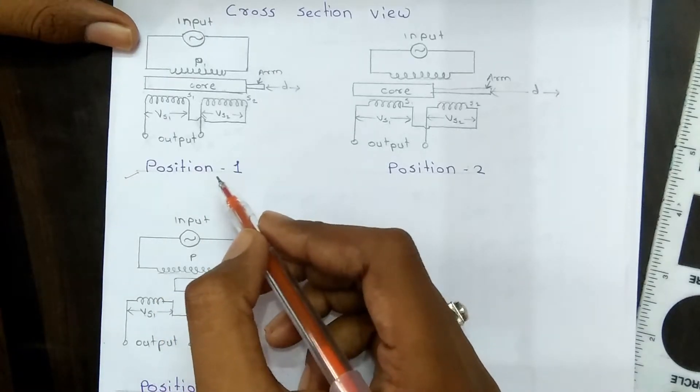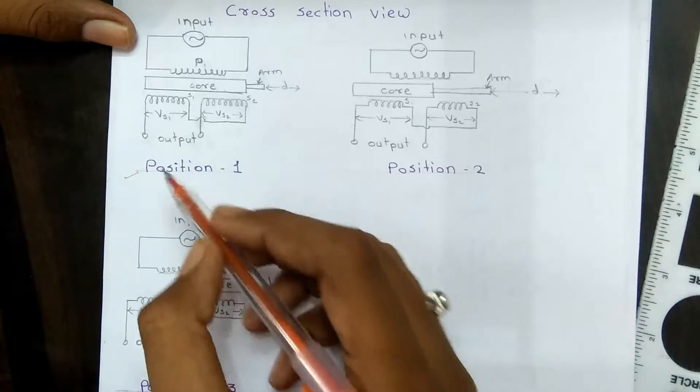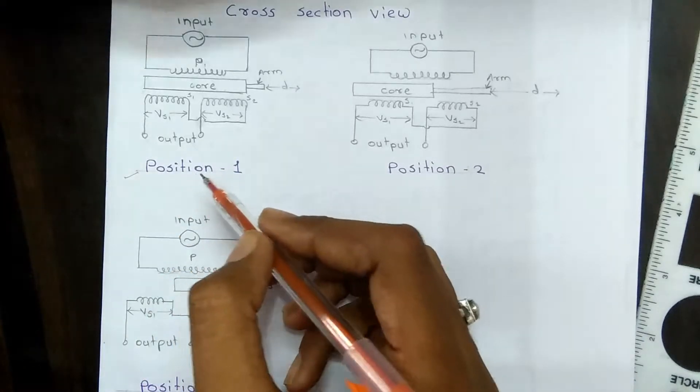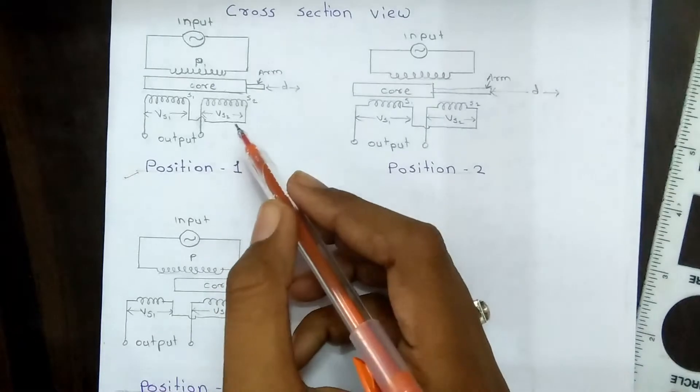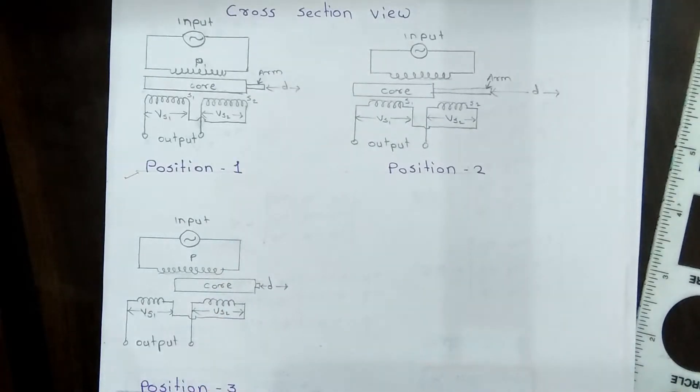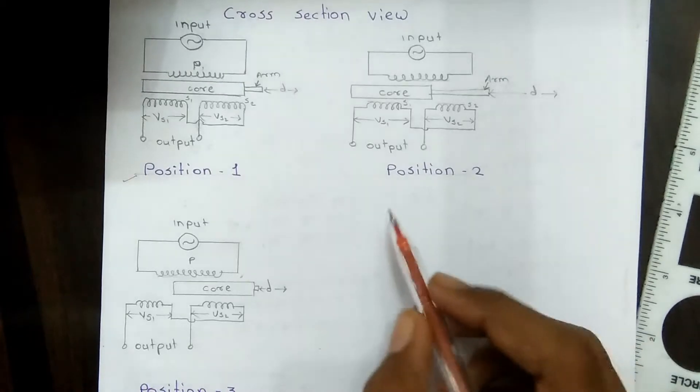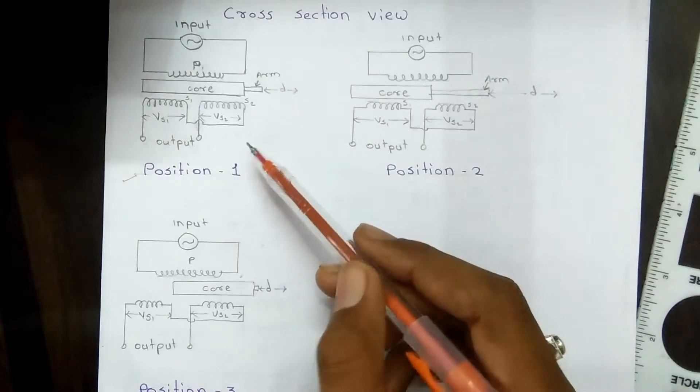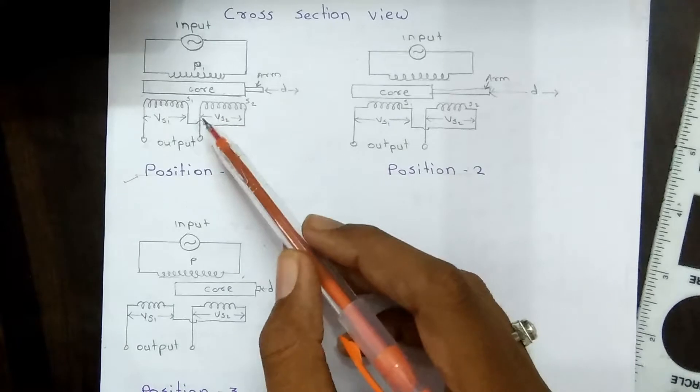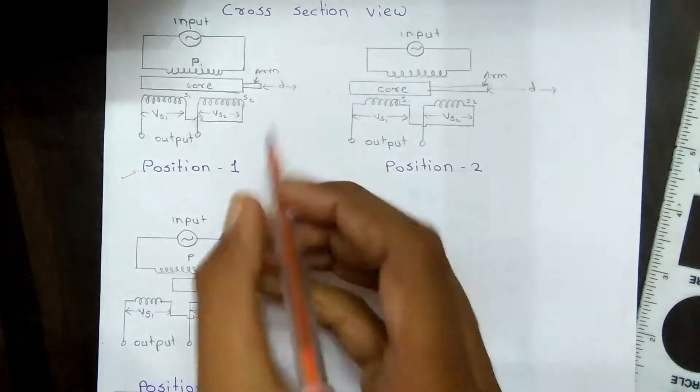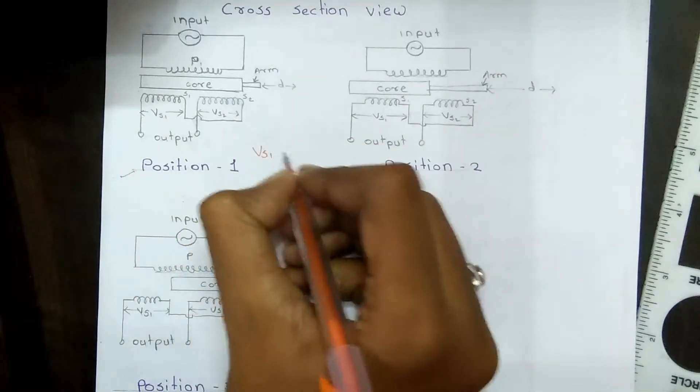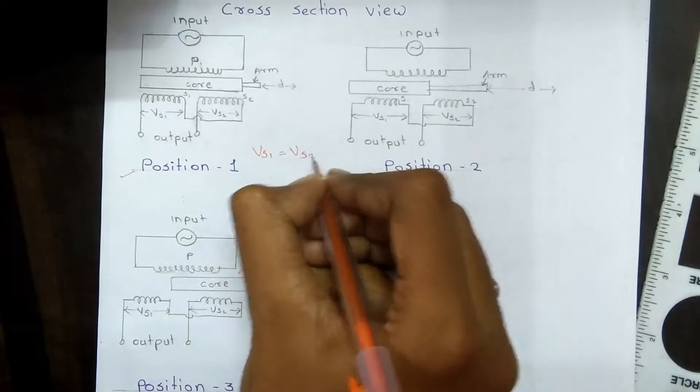EMFs are induced in both secondary windings. In the null position, VS1 = VS2. Hence, the output voltage VO at null position is 0.